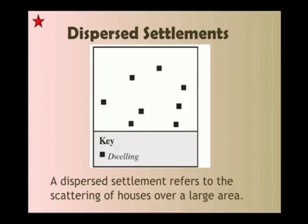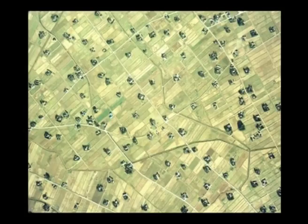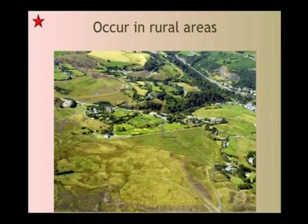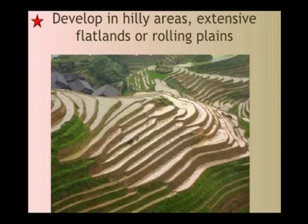The first pattern we will be seeing is dispersed settlements. A dispersed settlement refers to the scattering of houses over a large area. There is no particular pattern that emerges, so you will not have any concrete roads. It is just dwelling units without any particular direction. This is usually found in farmlands or hilly areas, occurring in rural areas and developing in hilly areas, extensive flatlands or rolling plains.